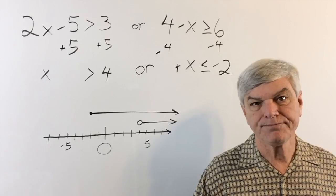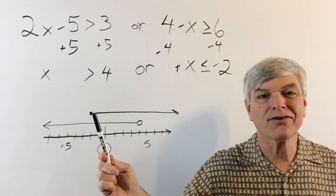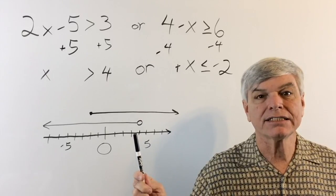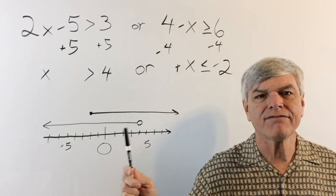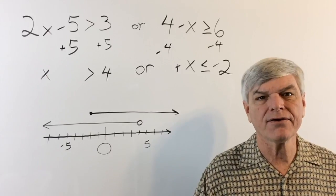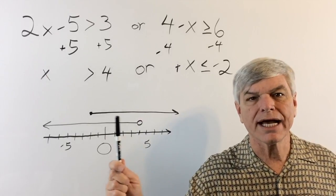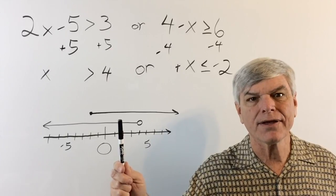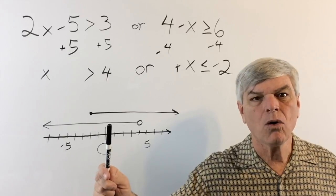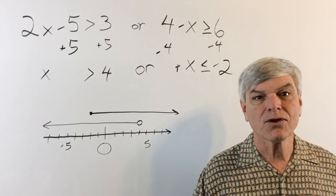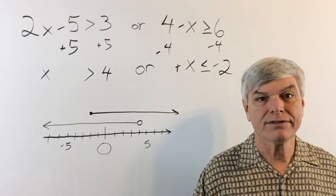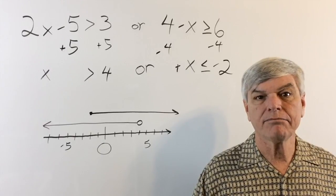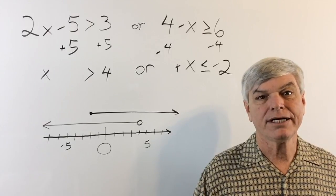Here's another example: x greater than or equal to negative 2 going right, and now x less than 4 going left. We have overlap between negative 2 and 4, but from any point in the overlap you're going to infinity in one direction or the other. So the graph covers the entire number line — mark a line over the entire area with arrows going out in both directions. The answer is every possible value, out to infinity in both directions.